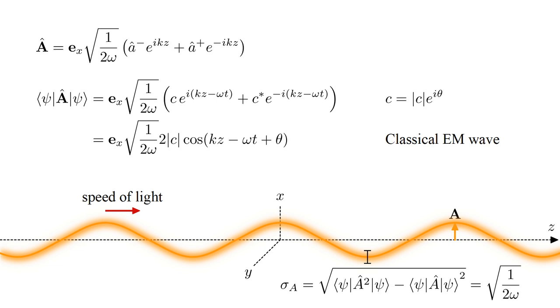So, as field amplitude increases, quantum noise becomes an ever smaller fraction of the field, and we approach the classical case, where the field has a precisely defined value throughout space and time.